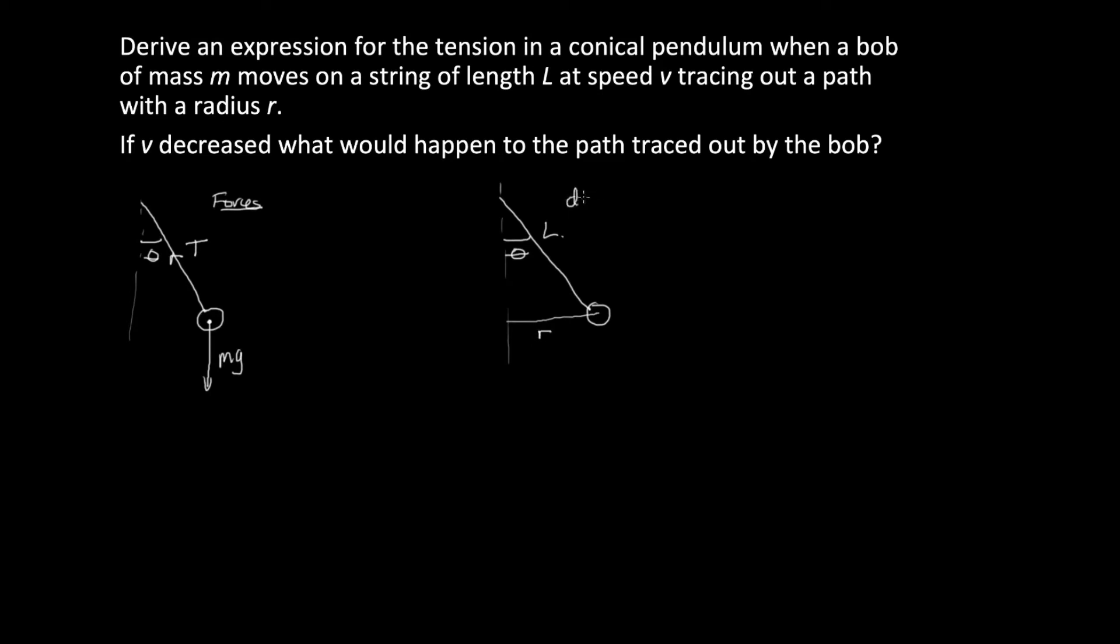So this is the displacement picture. Now these forces result in a resultant force towards the center mv squared on r, which is the centripetal force. So this force comes about because of the sum of this force and this force.